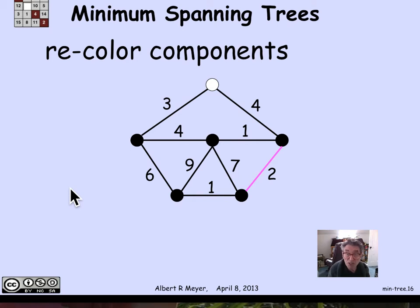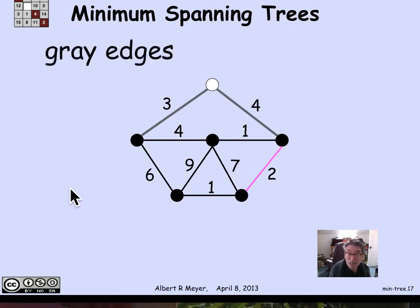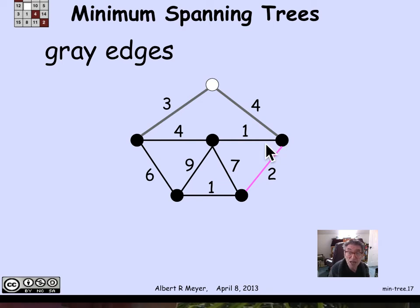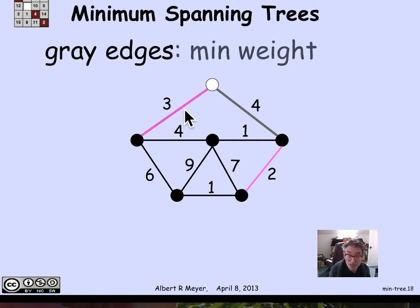Once I have this coloring, I identify the gray edges again. This time there are only two gray edges, because I chose to have only one white vertex. The minimum weight among the two gray edges is 3, so that will be my next edge in the minimum weight spanning tree.